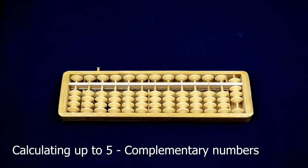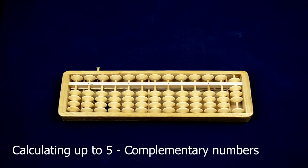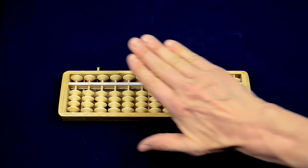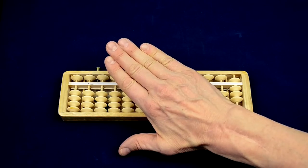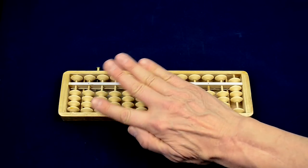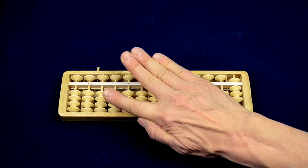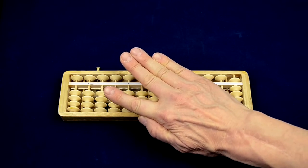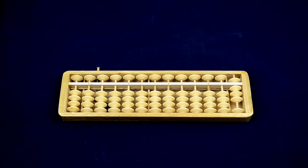Now I will show you how to use so-called complementary numbers for 5. 1 and 4 together are 5. 3 and 2 also gives 5. This we can use to make calculations faster than by the exchange method.